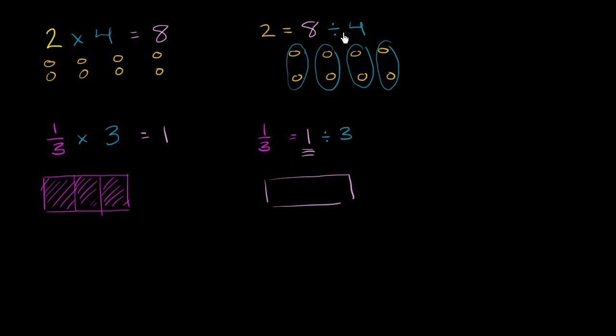And let's divide it into 3 equal sections, the same way that we divided this 8 into 4 equal groups. So if you divide this into 3 equal sections, the size of each of those sections is going to be exactly 1 third.